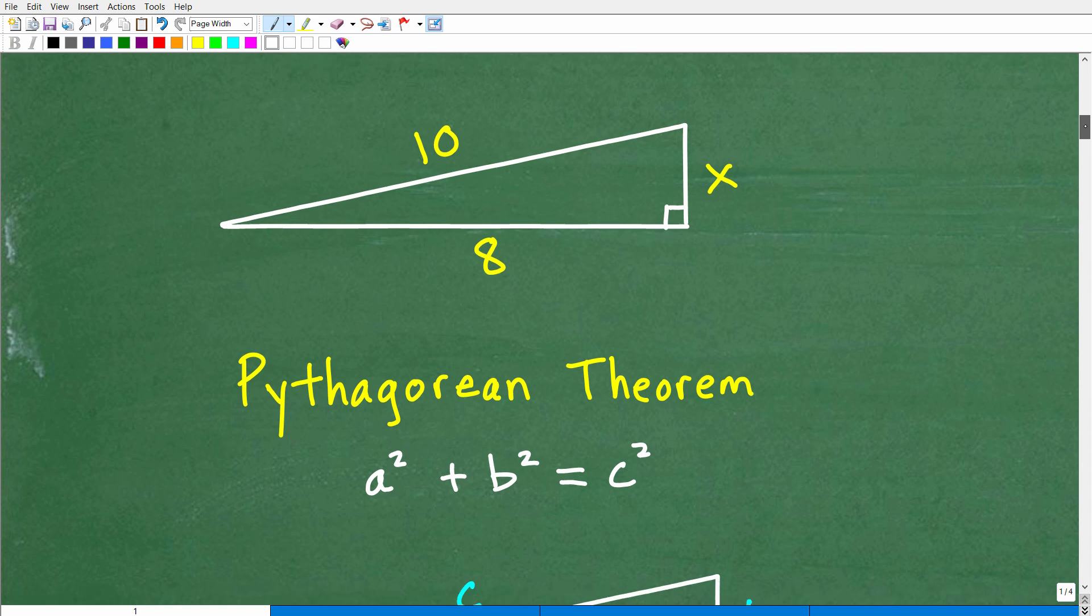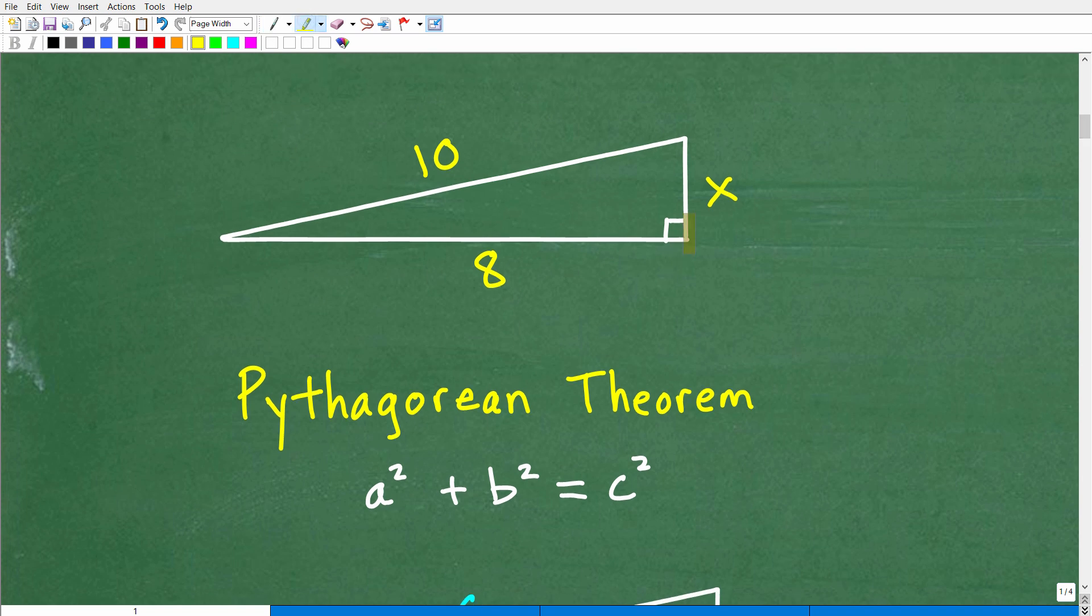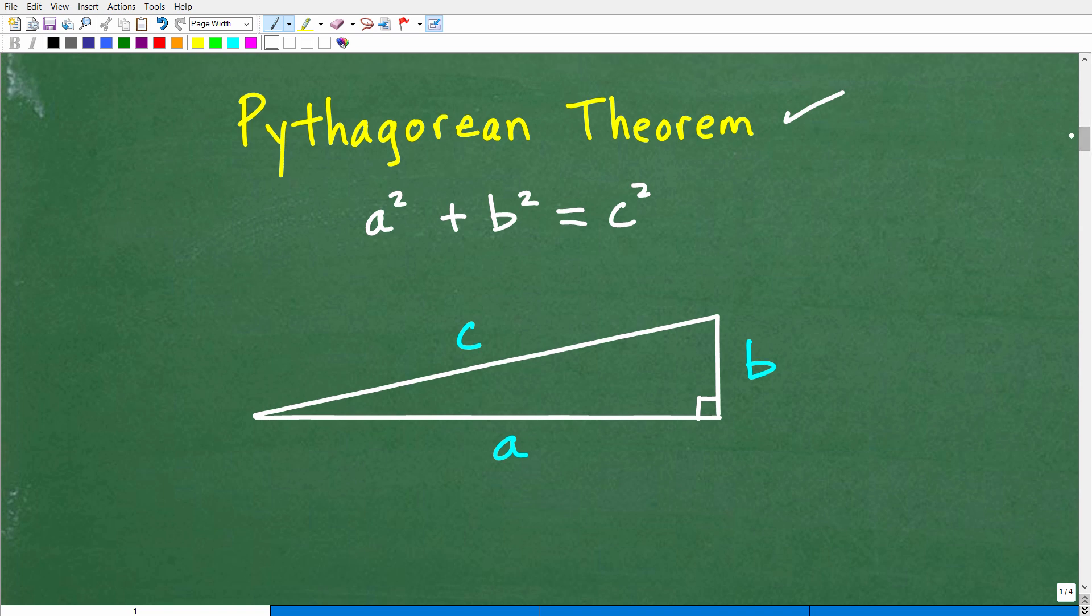Okay, so again, here is our problem. We recognize, oh, this is a right triangle. I'm trying to find a missing side in a right triangle. Automatically, you should be thinking Pythagorean Theorem. And that is a² + b² = c². But what does that mean? Well, let's go ahead and take a look at that now.